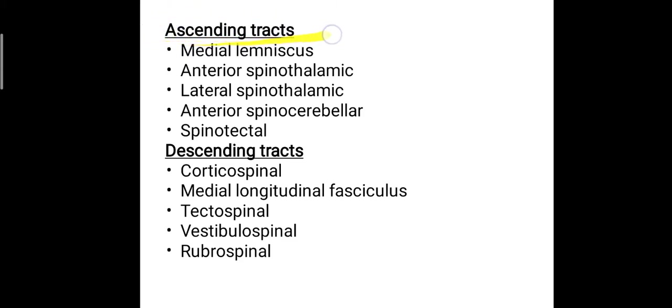The ascending tracts at the level of the olivary nucleus are the medial lemniscus, anterior spinothalamic tract, lateral spinothalamic tract, anterior spinocerebellar tract, and the spinotectal tract. The descending tracts include the corticospinal tracts, medial longitudinal fasciculus, tectospinal tract, vestibulospinal tract, and the rubrospinal tract. These tracts have already been covered in other classes.